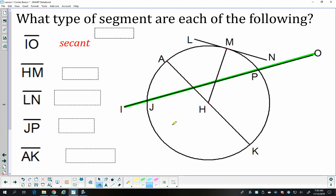Let's look at HM. HM starts at the center and touches the circle, so that segment is a radius. LN is outside the circle. It touches the circle at point M and then stays outside the circle, so that touches the circle once. It's a tangent.